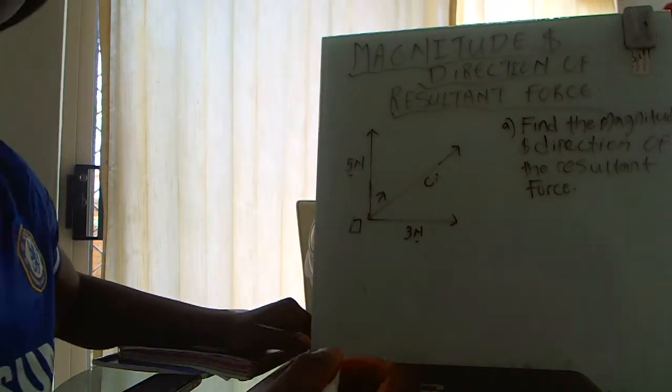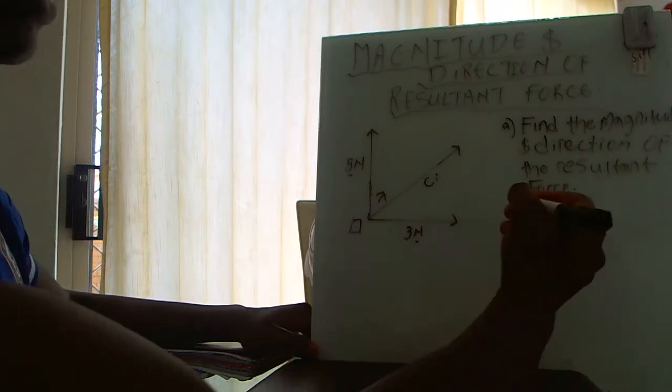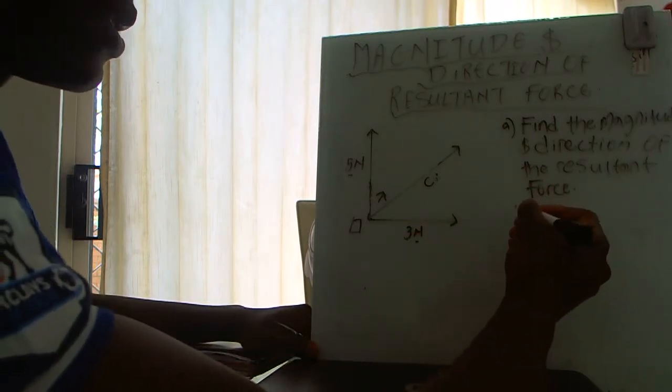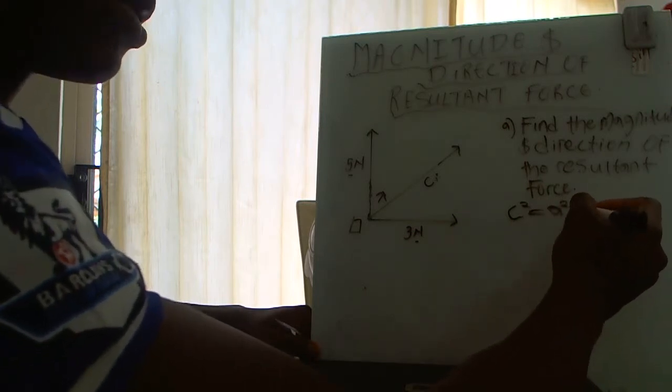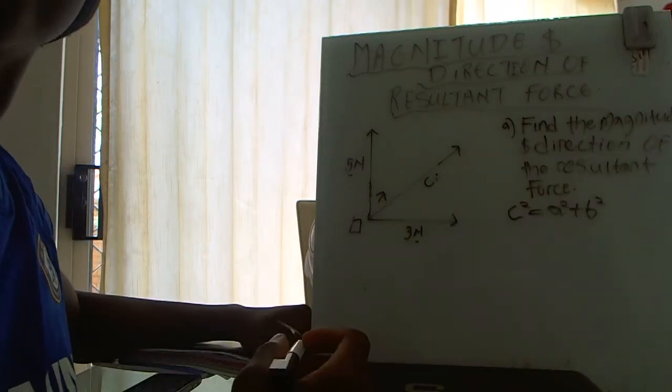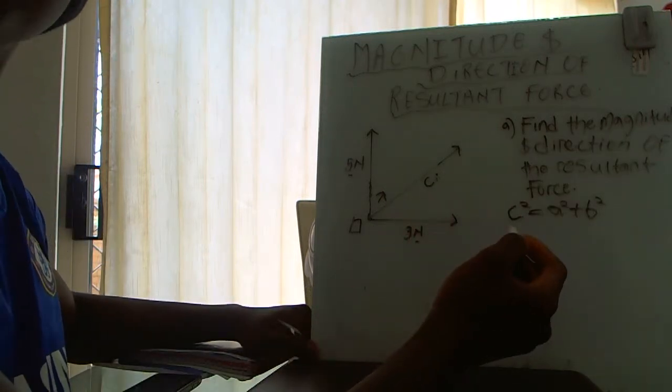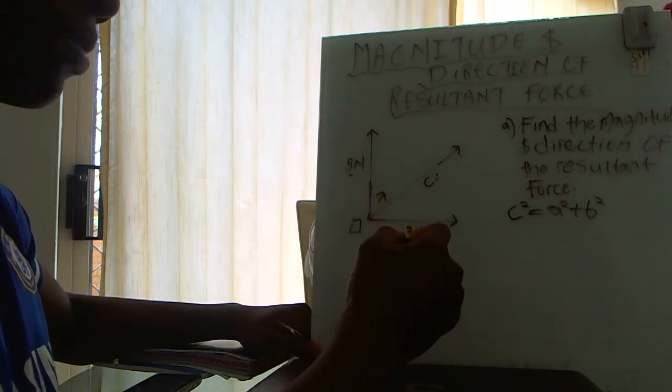We use the Pythagorean theorem, and that simply says c squared equals a squared plus b squared. When we look at this, our c is this and we have these two.